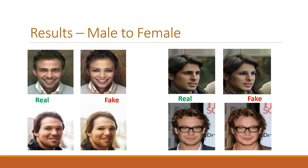Let us now examine the results of the network. In the male-to-female conversion results, the upper-left generated image has darker eyelashes, rounder lips, and clearly emphasized feminine features. In the lower-right example, the original image has glasses, but the network is still able to change features such as the region around the mouth — there is no longer any mustache and the cheek lines are smoother.